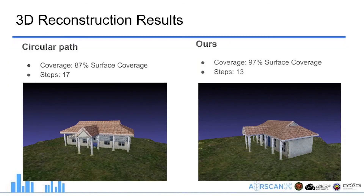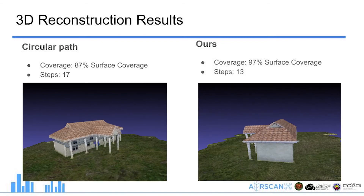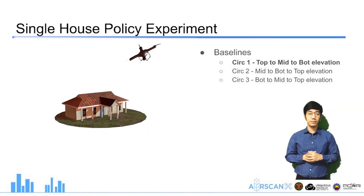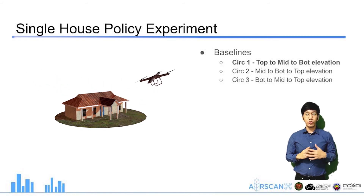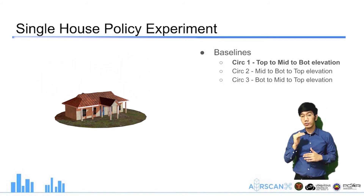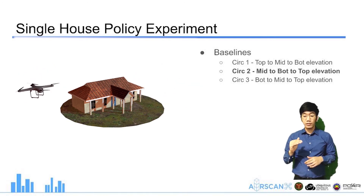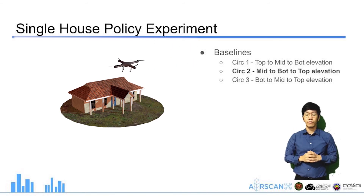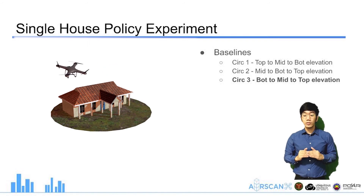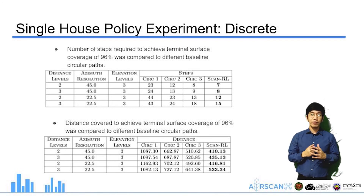A side-by-side comparison shows that in ScanRL, the self-occluded regions under the roof were reconstructed. To further evaluate ScanRL, we implemented three baseline circular paths with different elevation traversal orders: Circular 1 starts from the topmost elevation then goes to middle then bottom; Circular 2 goes from middle to top; and Circular 3 starts from the bottom, goes to middle, then to the topmost elevation. Results showed that ScanRL can learn an NBV policy to scan a house in fewer steps compared to all baseline circular paths, for both discrete and continuous action spaces.